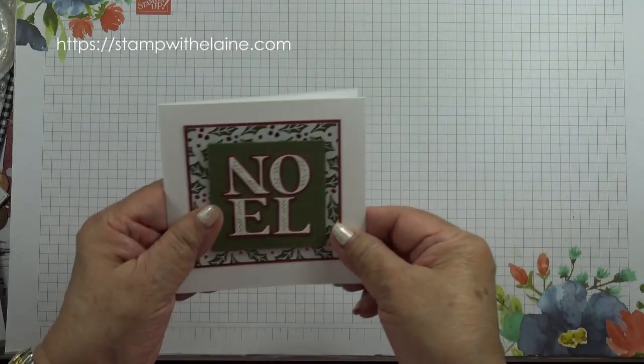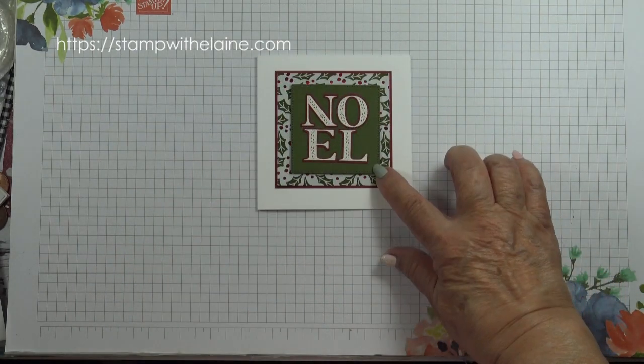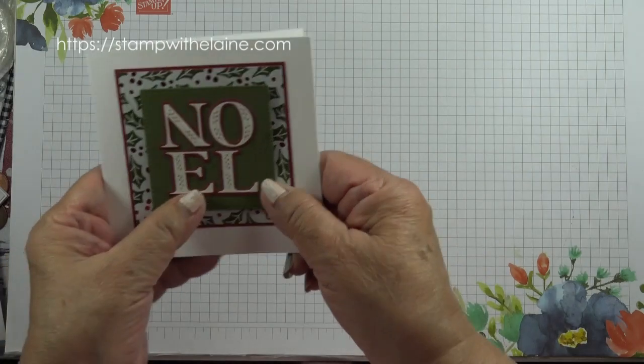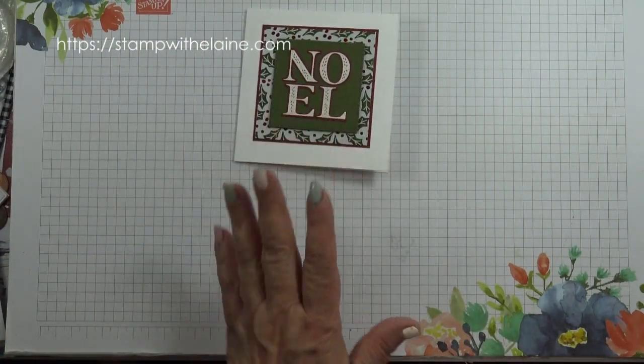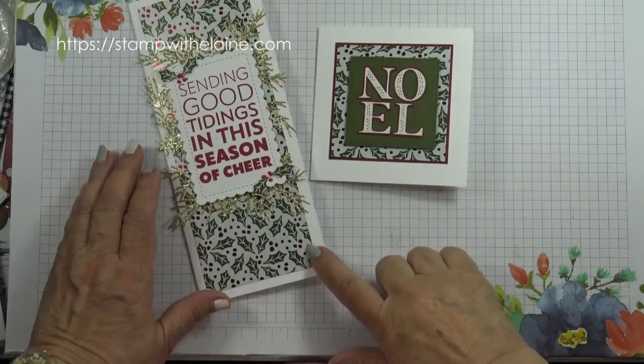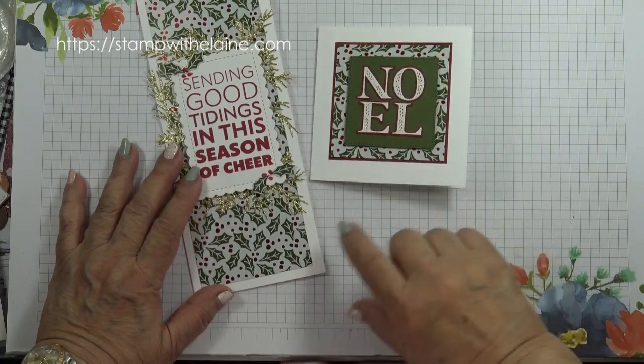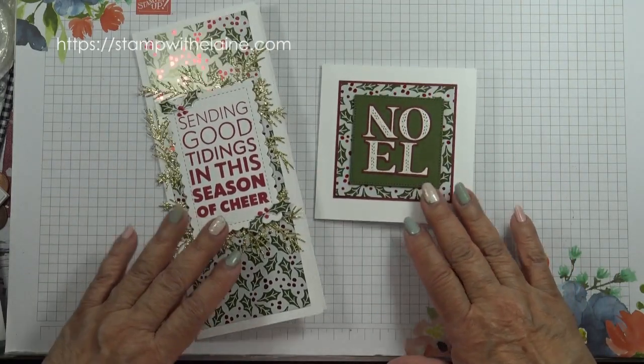So voila, how quick was that? You could add some more embellishments, but that will make the card even thicker. And I want to keep the postage to a minimum. So voila, there you have a long and slim card and a square card made out of just one A4 sheet.